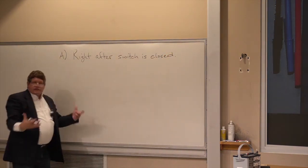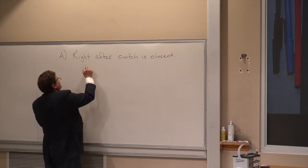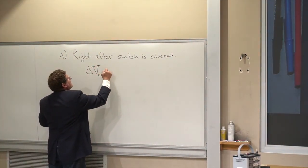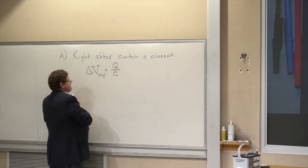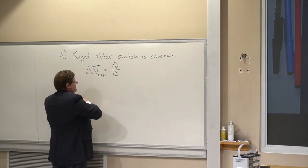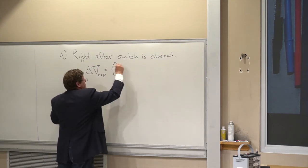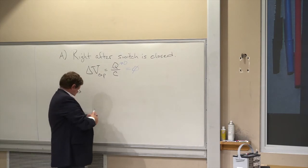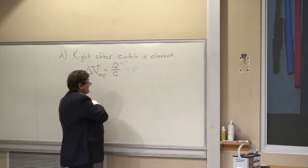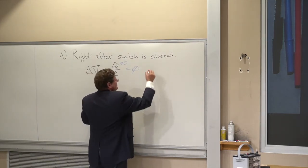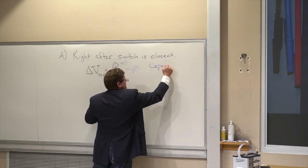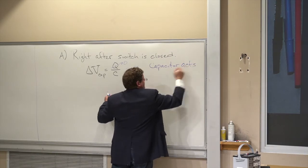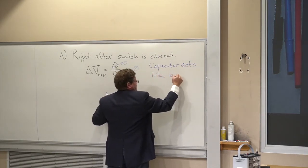Because it takes time to charge up a capacitor, that means the change in voltage across the capacitor, which is just the charge divided by C, is going to be zero. And that means that the capacitor acts like a wire.